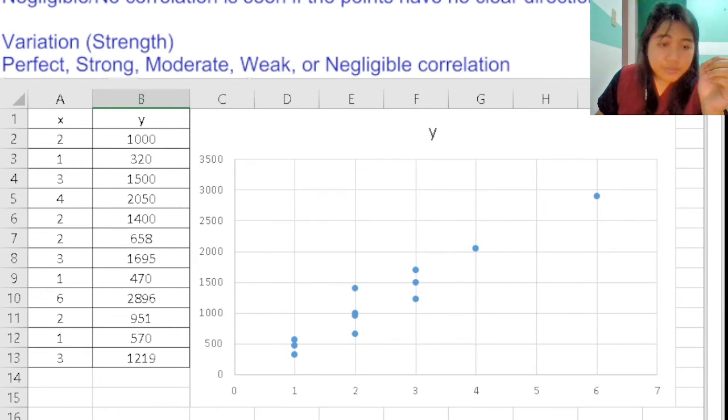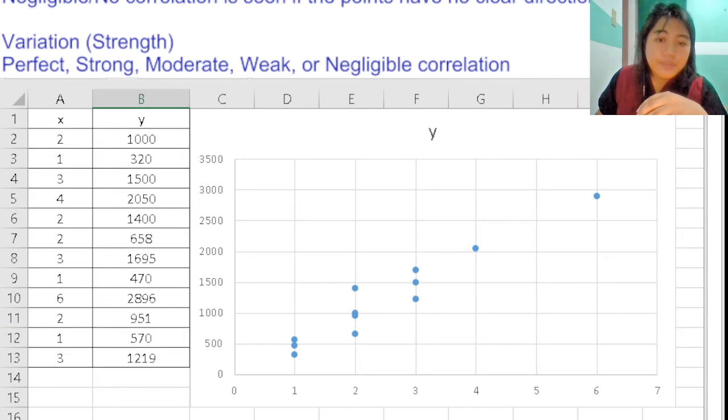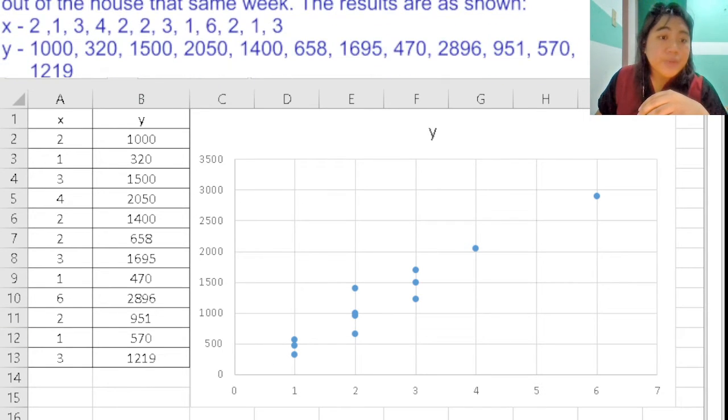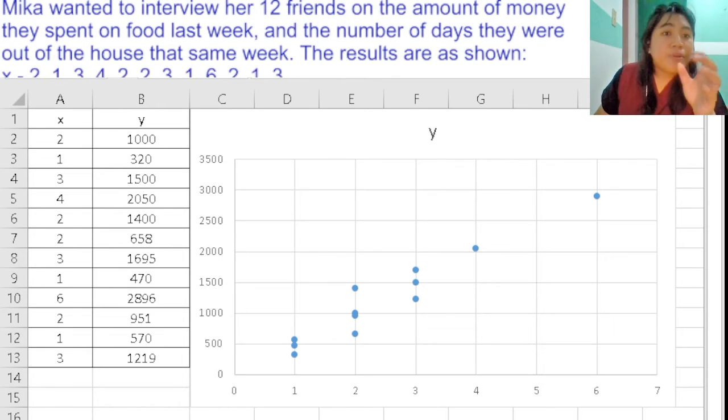For the three examples I have shown you, we got the data from these variables. The variables being the number of days they were out of the house that same week being the independent variable.